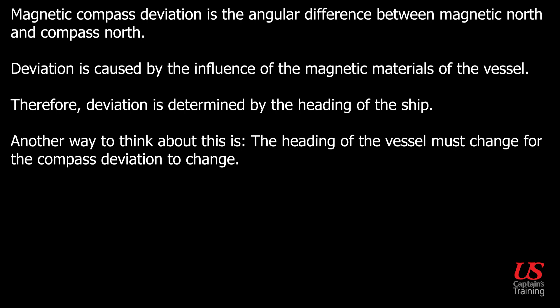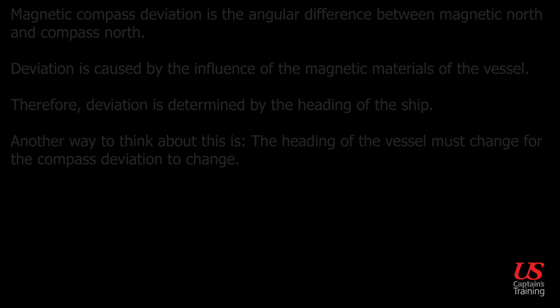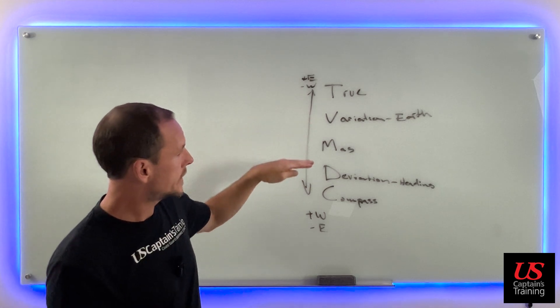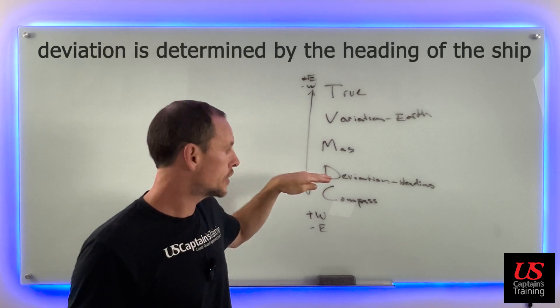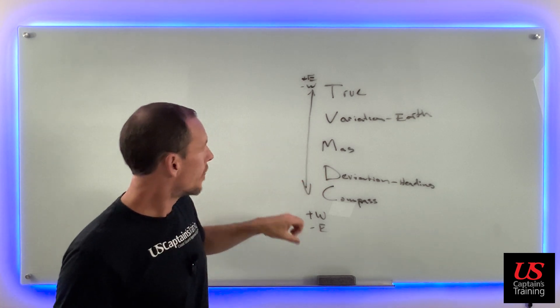Deviation is caused by the influence of the magnetic materials of the vessel. Therefore, deviation is determined by the heading of the ship. Another way to think about this: the heading of the vessel must change for the compass deviation to change. So variation is where you are on Earth, and deviation is dependent on the heading of your ship.